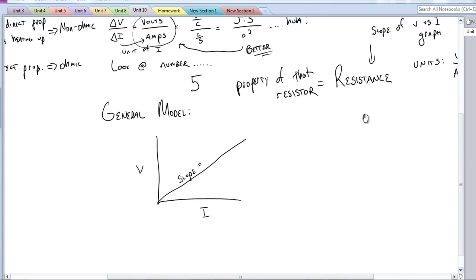So finally, the key idea here is the general model is V versus I. Our slope is what we call resistance, which is abbreviated by an R. And so you get the equation V equals IR.